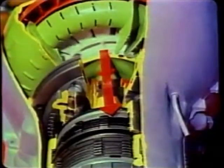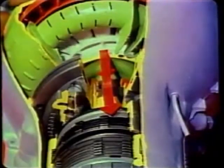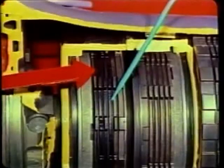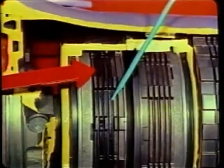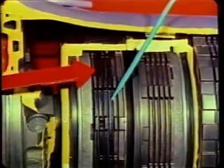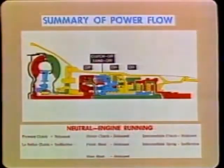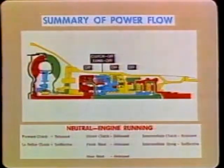Let's take a look at the neutral position. In neutral, power flow from the engine passes through the converter assembly, through the turbine shaft to the forward clutch. Since the forward clutch pack is in the release position, no power can be transmitted from the torque converter turbine shaft to the rest of the transmission, thus the transmission remains in a neutral position. Now let's follow the black arrows of the power flow in art form — notice how the power path stops at the forward clutch.